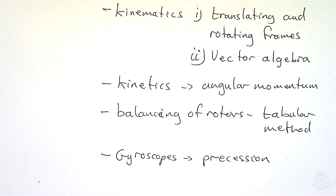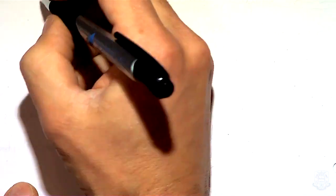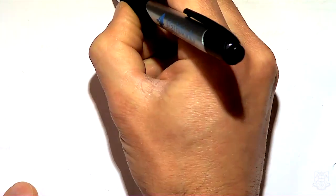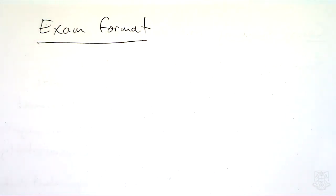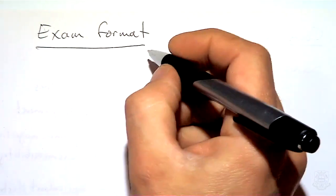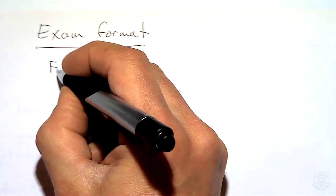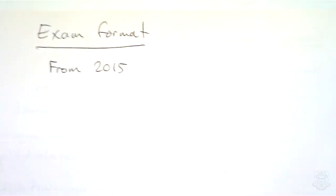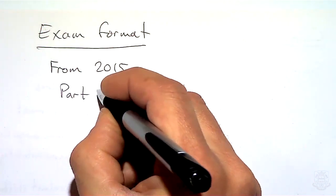So that's a summary of what we did in the course, just briefly highlighting the main topics. The exam format from 2015 has this format. You should be able to find papers that go back past that, but from 2015 it's been formatted as two parts: Part A and Part B.